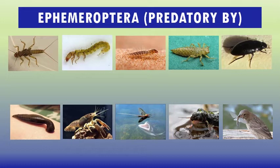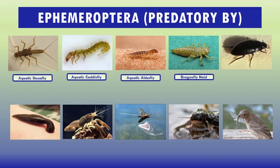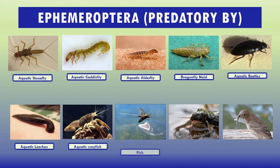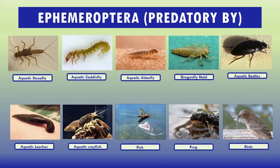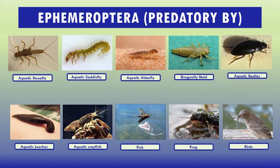Mayflies have a lot of predators. They are predated by several creatures including aquatic stoneflies, aquatic flies, fish, dragonfly naiads, aquatic beetles, leeches, aquatic crabs, frogs, birds, and others. Thank you so much for watching this video.